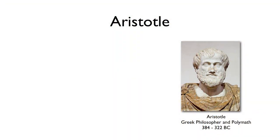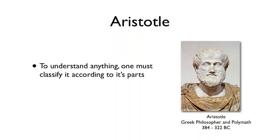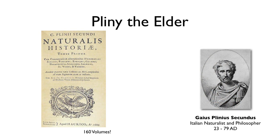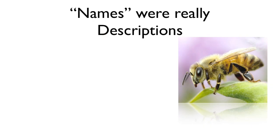The first person to write extensively about this was Aristotle. He said to understand anything, you have to classify it according to its parts. And he classified all animals into one of two groups: either those with blood or those he called bloodless. His work was followed by many others, including Pliny the Elder, who wrote 160 volumes on this subject.